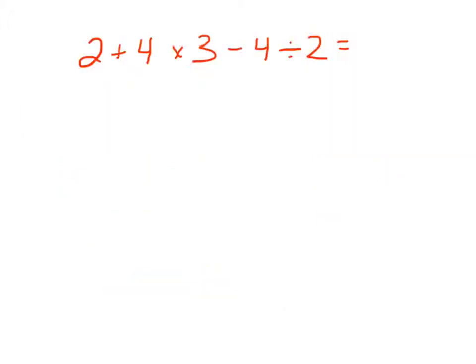Alright, in example one we see 2 plus 4 times 3 minus 4 divided by 2. There's no parentheses here. I don't see any powers and I don't see any exponents. So, I need to take and do the multiplication and division first.